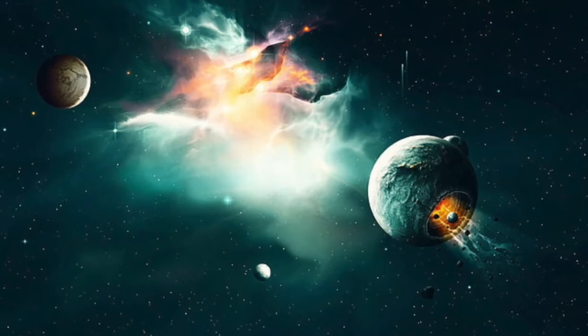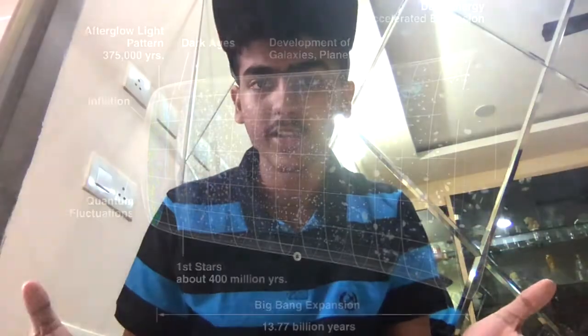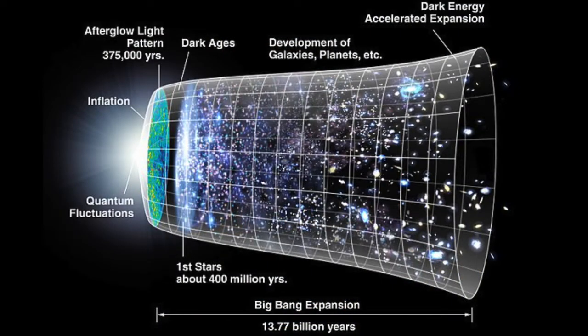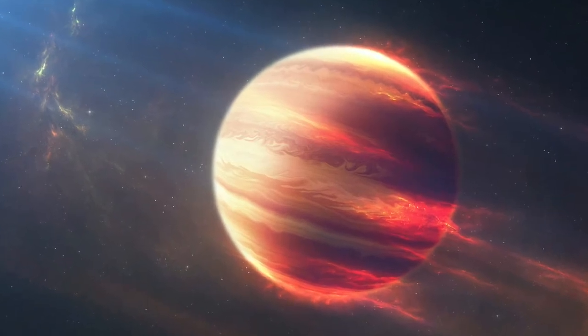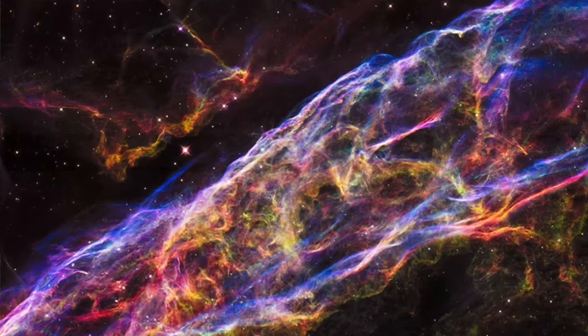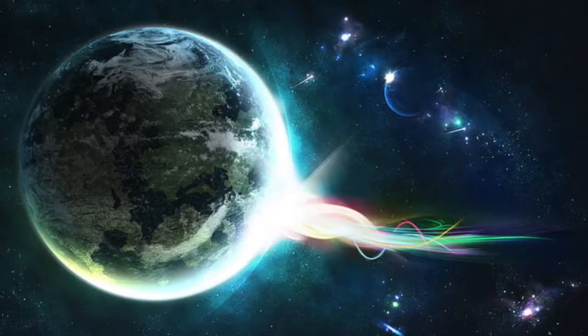We know that the universe expands and cools. So at around 300,000 years, matter as we know it begins to form. Matter actually began to form only after hundreds of thousands of years after the Big Bang, long after the fireball had cooled. The resulting gases would form the stars, planets, and galaxies that exist today.